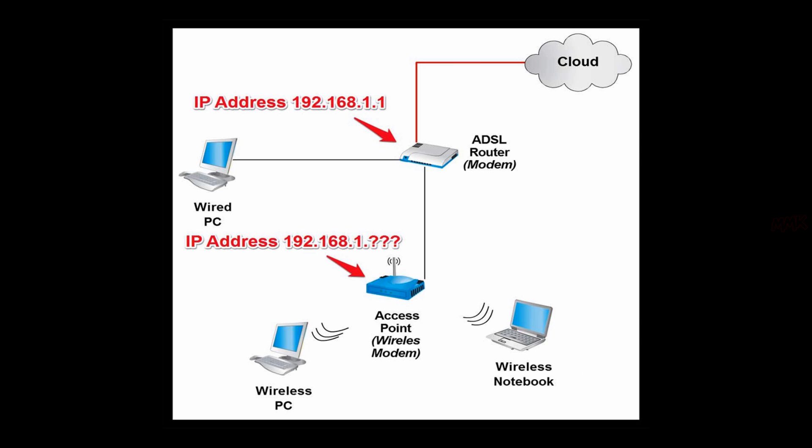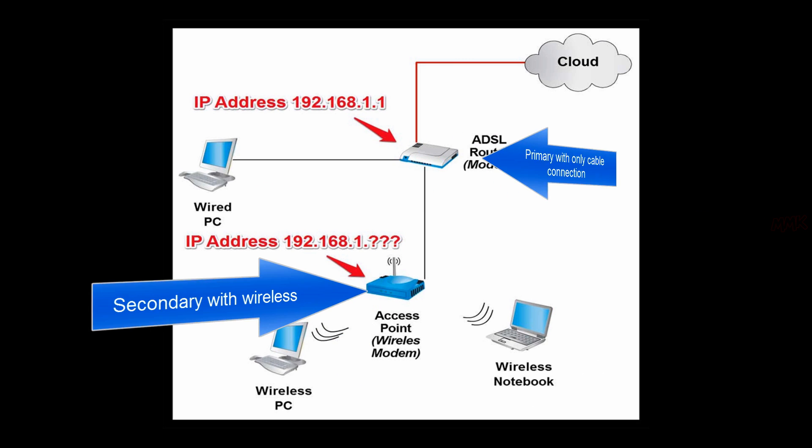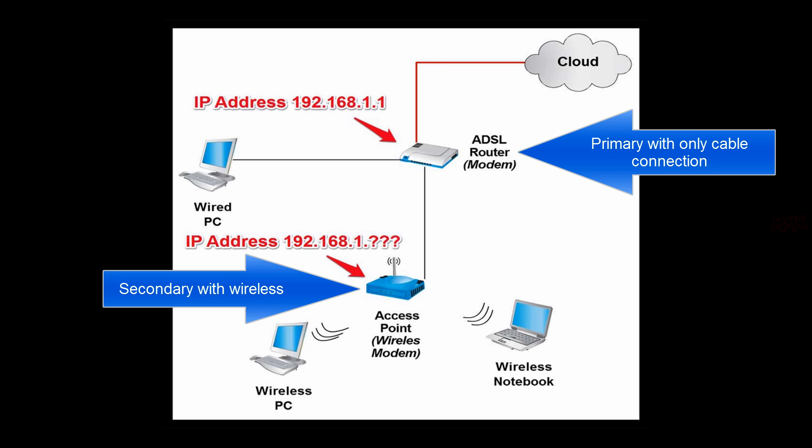If you have two routers — primary with only cable connection and secondary with wireless — you should find the IP address of your wireless router, because if you use your default gateway IP address, you will end up in the primary router.